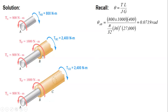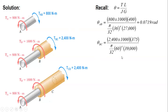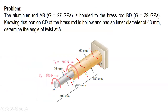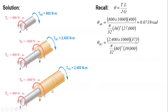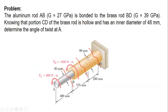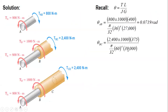We do the same for segment BC. The torque is 2400 Nm, with the conversion factor from meters to millimeters applied. The length is 375 mm and the diameter is 60 mm. The modulus of rigidity is 39 GPa, converted to 39,000 MPa. The angle of twist for BC is 0.081 radians.